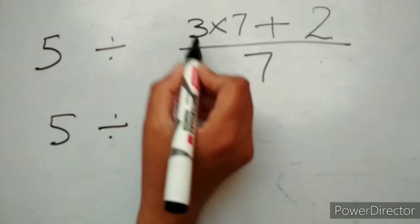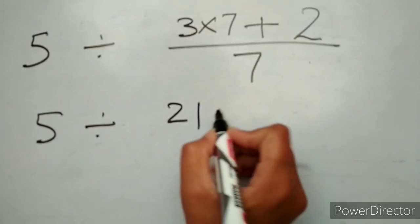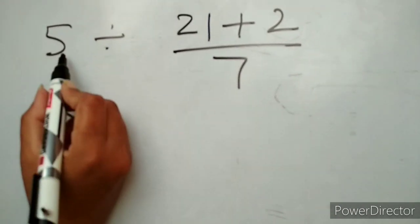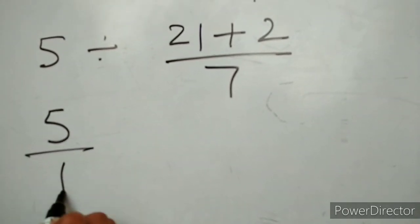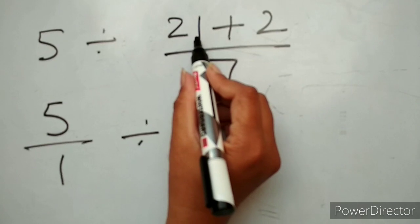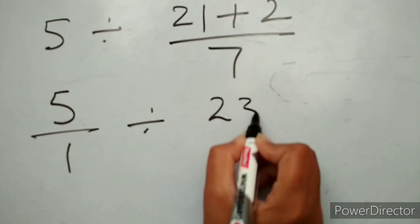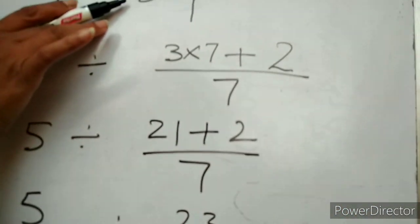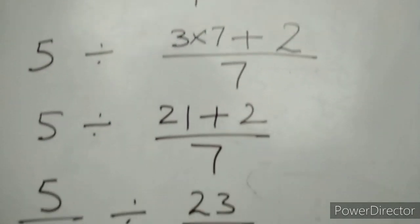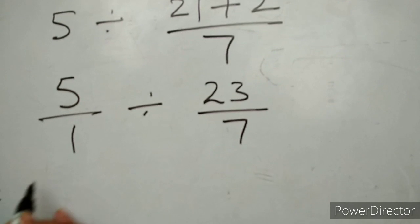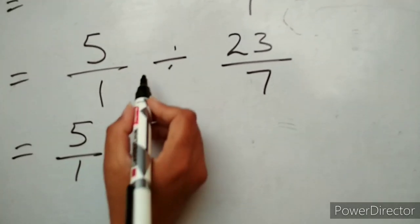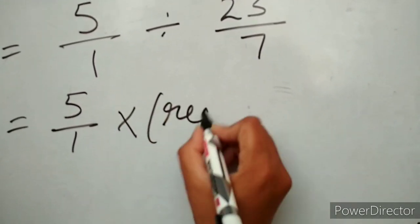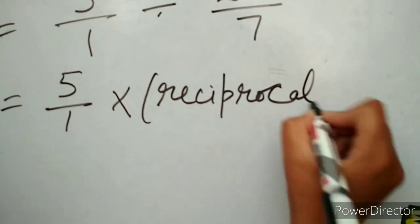So we have 5 divided by 3 multiplied by 7, which gives 21, plus 2 over 7. 5 is a whole number so we convert it into a fraction by writing 1 in its denominator, giving 5 upon 1. Then we divide by 21 plus 2, which equals 23 upon 7. So we have 5 upon 1 divided by 23 upon 7. To divide fractions, we multiply by the reciprocal.